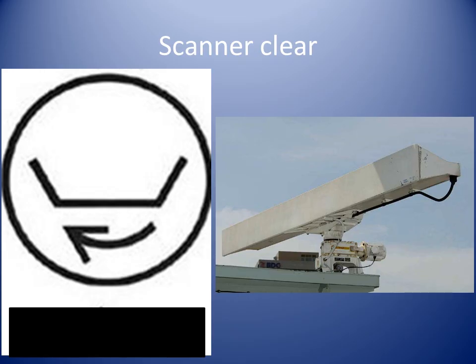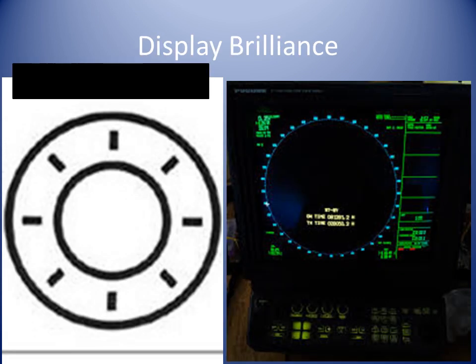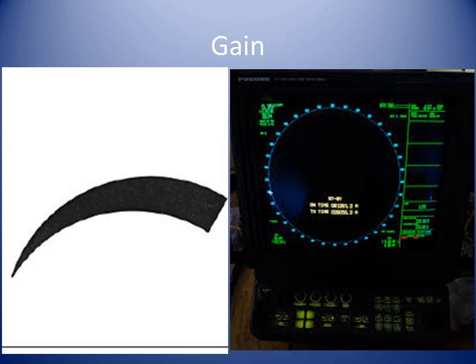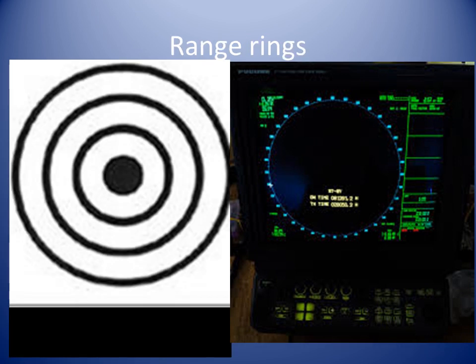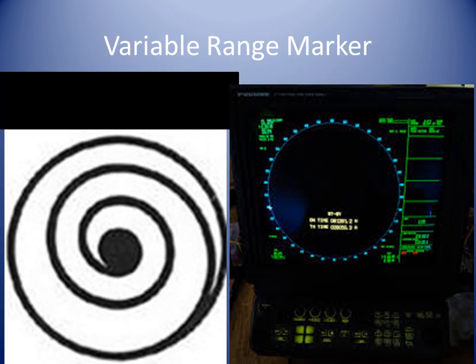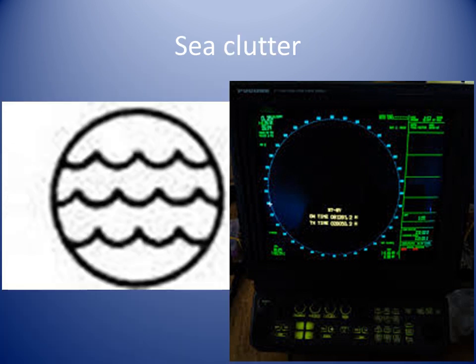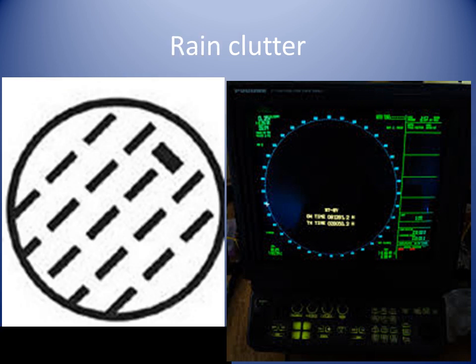Before switching on a radar, always visually check that the scanner is clear and not fouled by flags or halyards. Turn the display brilliance control to 0 or minimum. Set the gain to 0. Set the variable range marker brilliance to 0. The NTC clutter should be set to 0, and the NTC rain clutter should also be set to 0.